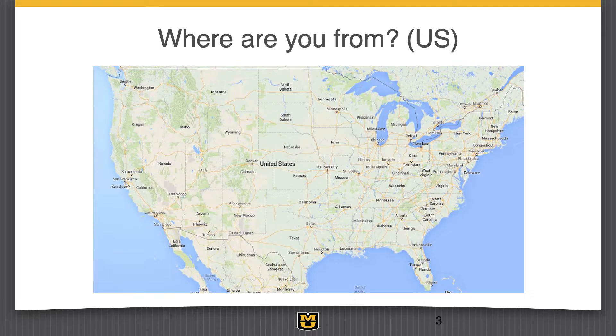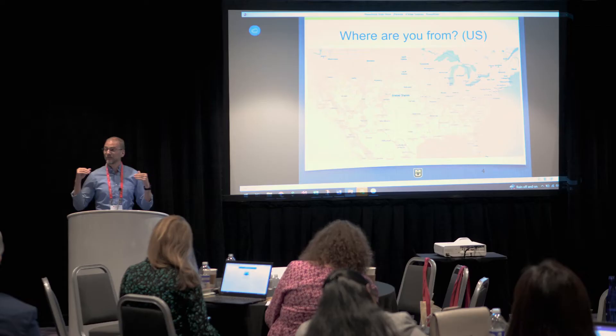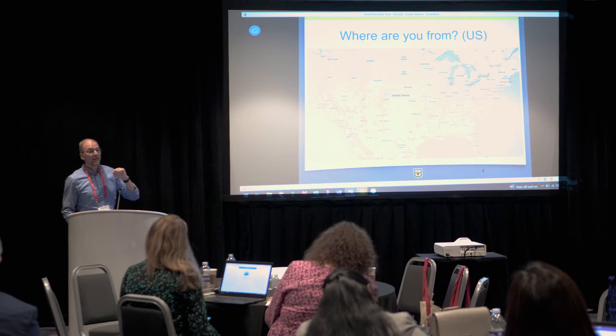Some of you probably use iClicker a lot, maybe some others a little bit. Everyone uses Achieve — you have access to iClicker through Achieve and the students have access to it already through the ebooks. You have the ability to do it with no extra cost because it's already included in the Achieve fee. At Mizzou, interestingly, our entire university has a site license, so we have two different ways students can access it.